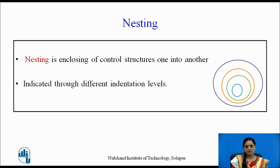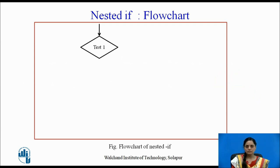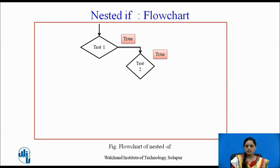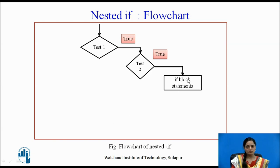This is implied in the program by different indentation levels. Now let us look in detail at how nested if works. We use test1 to check one particular condition. If test1 evaluates to true, we put one more if condition within test1 itself. If test2 also evaluates to logical true, the statements written within the if block of test2 will be executed. So for execution of those if block statements, both test2 and test1 must evaluate to logical true.